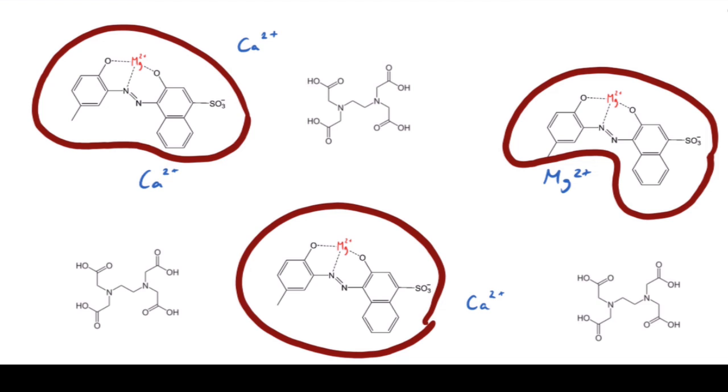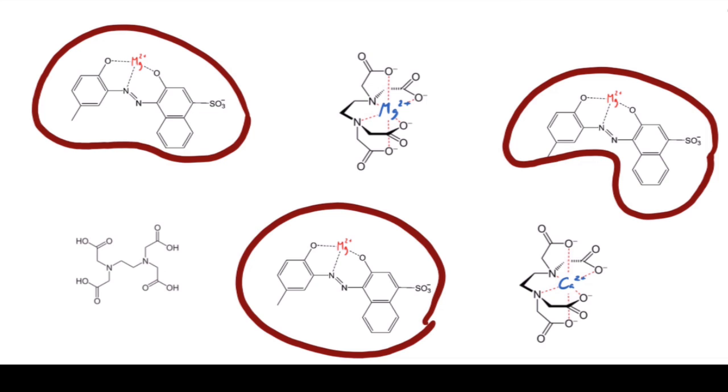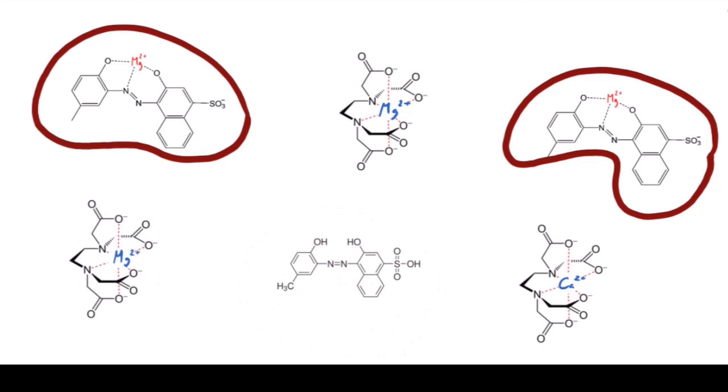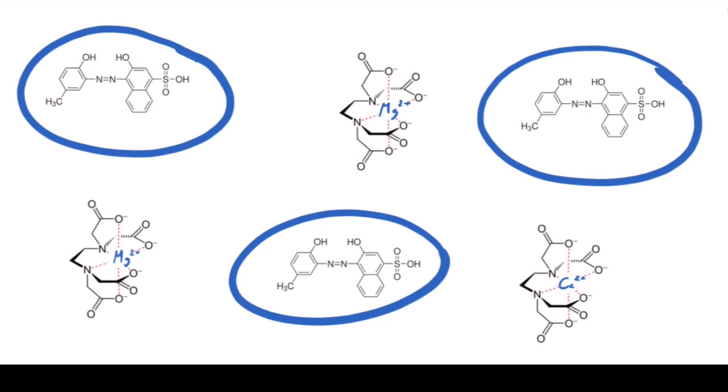Once we start the titration, the free calcium and magnesium ions will complex with the added EDTA. Then, the EDTA will pull away magnesium ions from the calgamite indicator until the color of the solution goes to first purple, then blue, which indicates the end of the titration.